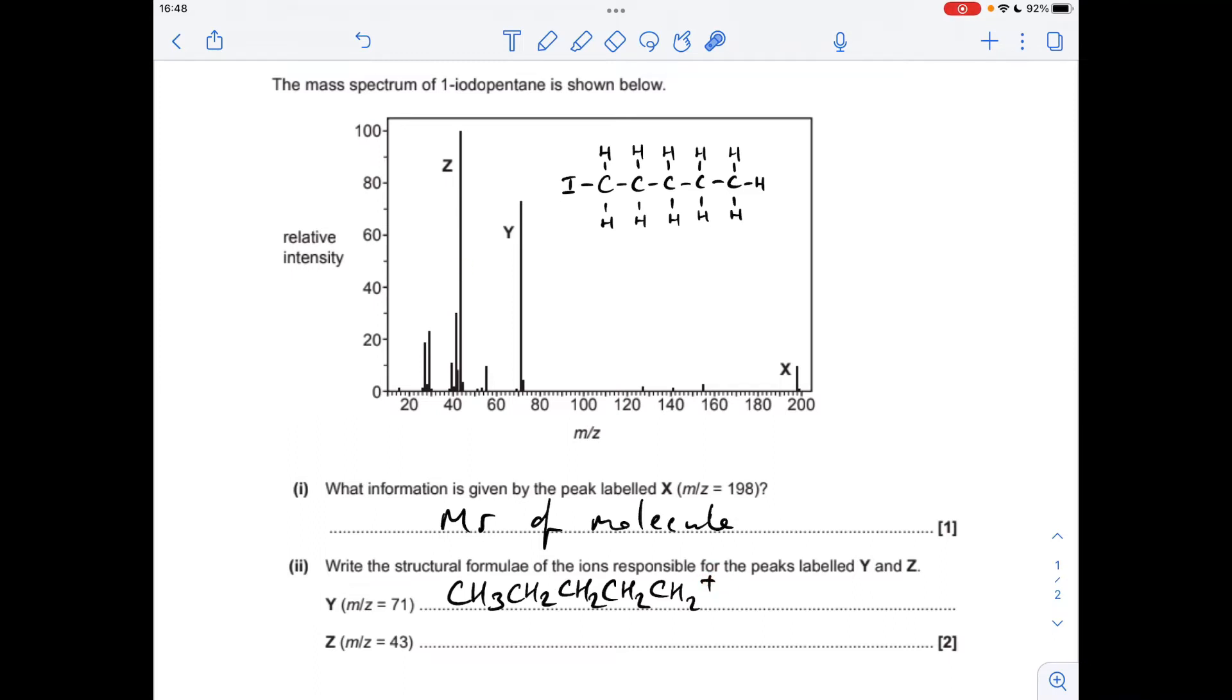Peak Z with an M over Z value of 43. This is quite a common fragment, this one. So it's three carbons and seven hydrogens. That gives you an M over Z of 43. So that's the structural formula there, and again, don't forget that positive charge.